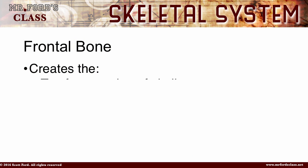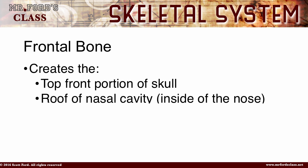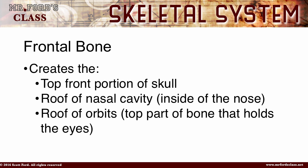Here's some description for the frontal bone: it creates the top front portion of the skull, it is the roof of the nasal cavity — that's basically inside your nose — and it forms the roof of the orbits. We are going to have a separate video just on the bones that make up the orbit, because that's guaranteed a test question. Also within the frontal bone are two sinuses — the frontal sinuses, which makes sense: frontal bone, frontal sinuses. So the frontal bone contains two frontal sinuses.